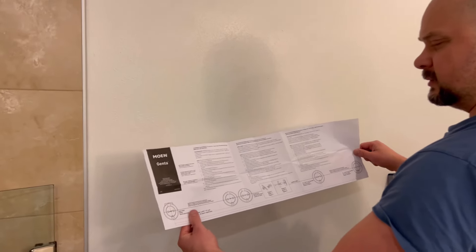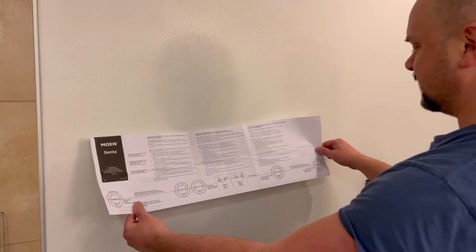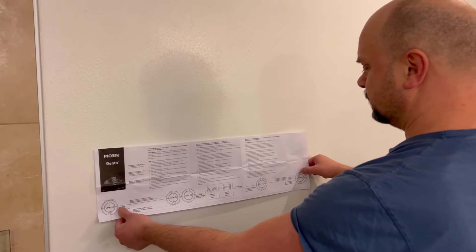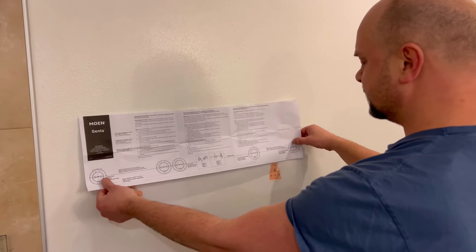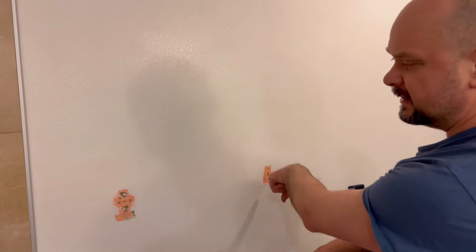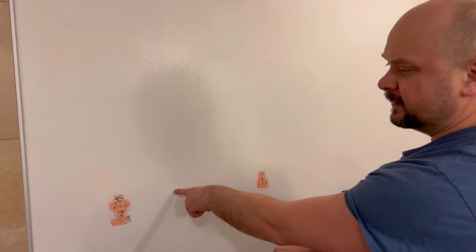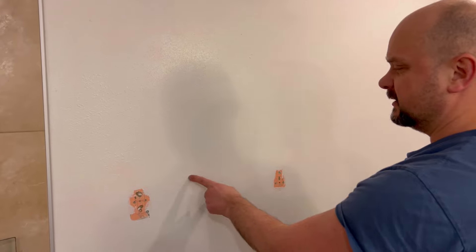You get the template that you can use to mount the size of towel holder that you're using. Currently we bought the 24 inch and replacing my old 18 inch.